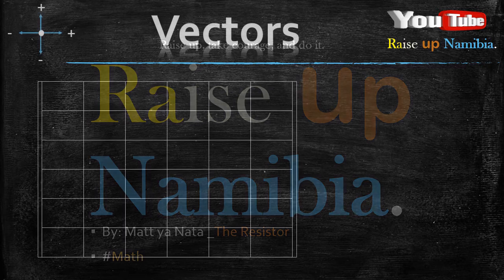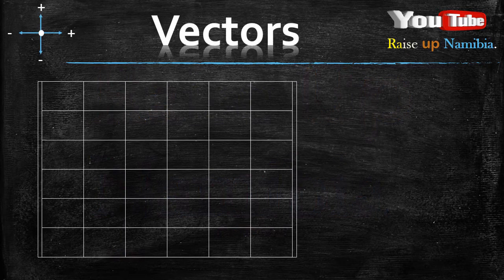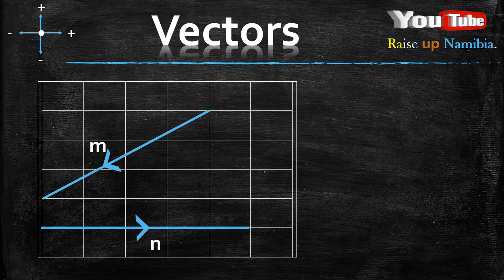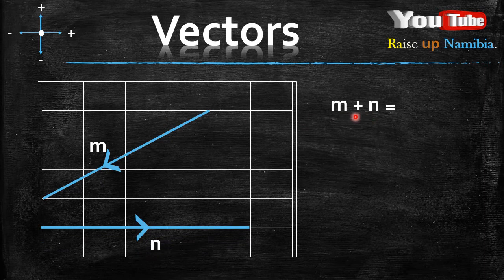So, what do you do when you are given two vectors and you are asked to add the two vectors? Now, when you are asked to add, this is actually very easy because what you do is you can just use the head to tail method.